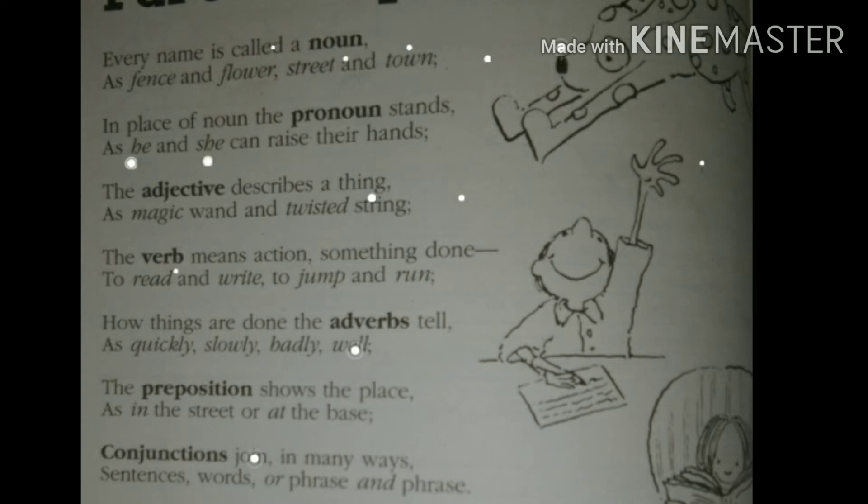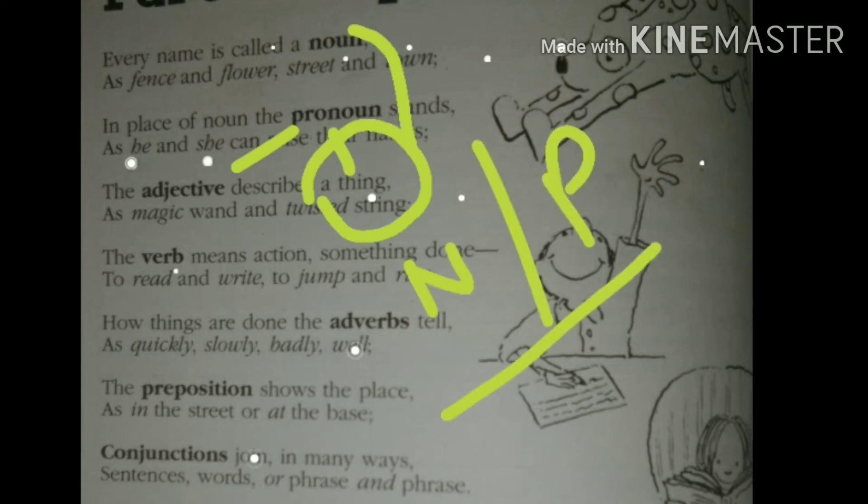Now let's move on to the adjective. The adjective describes a thing as magic wand and twisted string. Here, a thing is a noun or a pronoun. Whatever defines the noun or pronoun, tells its qualities, describes it, that term is called adjective.